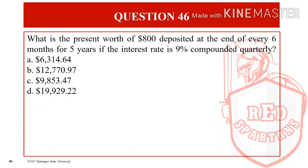For question number 46, what is the present worth of $800 deposited at the end of every 6 months for 5 years if the interest rate is 9% compounded quarterly? Letter A: $6,314.64. B: $12,770.97. C: $9,853.47. And letter D: $19,929.22.